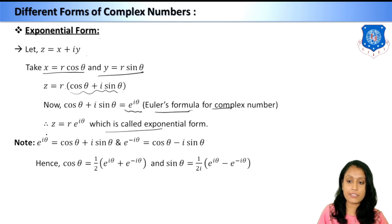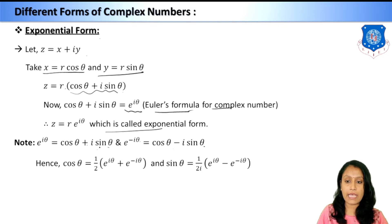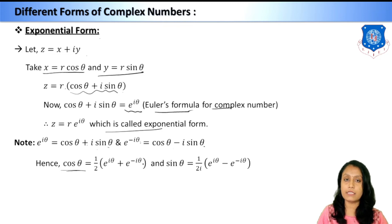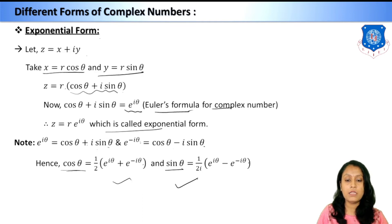We know e^(iθ) = cos θ + i sin θ, and e^(−iθ) = cos θ − i sin θ. Adding these two: 2 cos θ = e^(iθ) + e^(−iθ). Similarly, subtracting and solving for sin θ gives sin θ = (1/2i)(e^(iθ) − e^(−iθ)). We need to remember these two as formulas.